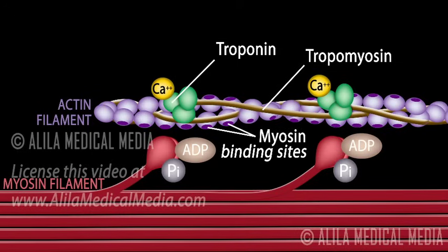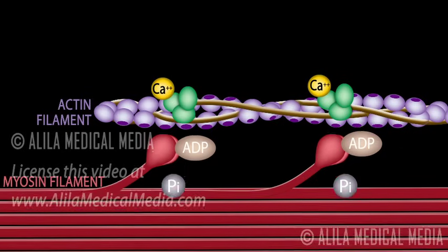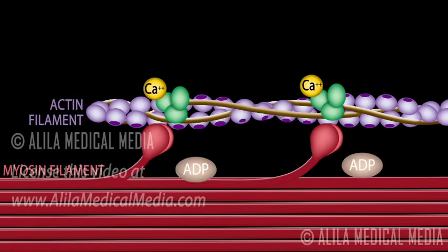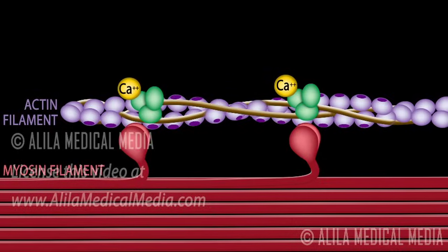At this stage, the head of each myosin unit is bound to an ADP and a phosphate molecule remaining from the previous muscular contraction. The myosin heads release these phosphates and bind to the actin myofilaments via the newly exposed myosin binding sites. The two myofilaments glide past one another, propelled by a head-first movement of the myosin units, powered by the chemical energy stored in their heads. As the units move, they release the ADP molecules bound to their heads.